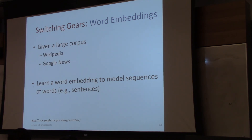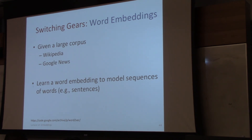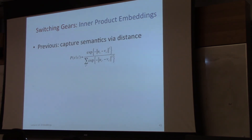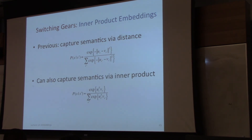Switching gears for the last part of the lecture on word embedding. Given a large corpus of text like Wikipedia or Google News, word embedding models treat these as sequences of words or sliding windows of words. We're not going to use a distance-based embedding — the previous playlist embedding used distances to capture semantics. Instead, we'll capture semantics using inner products, which is very much like a latent factor model. In fact, there are versions basically equivalent to a latent factor model.